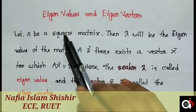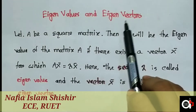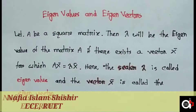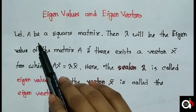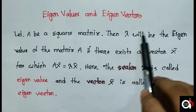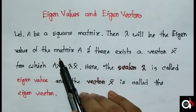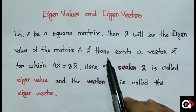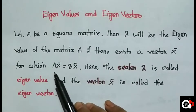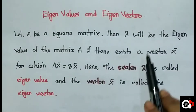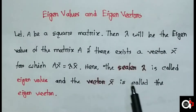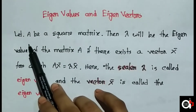Assalamu alaikum. Today's topic is eigenvalues and eigenvectors. First, let's understand the definition. Let A be a square matrix. Then lambda will be the eigenvalue of the matrix A if there exists a vector x for which Ax equals lambda x. Here, the scalar lambda is called the eigenvalue and the vector x is called the eigenvector.